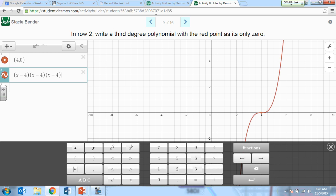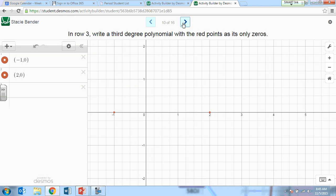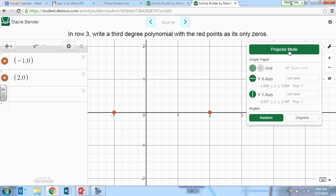All right. Last one. Third degree with only these points so if we have a negative 1 and a 2 for my points this is my zeros, what could we do to get a third degree polynomial with those zeros? My zeros my zeros are negative 1 and 2 what are my factors? x plus 1 and x minus 2. That will only get me quadratic right? So what would I need to do?